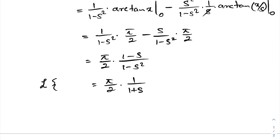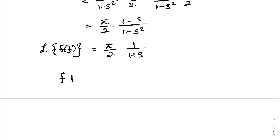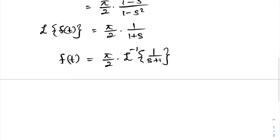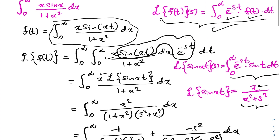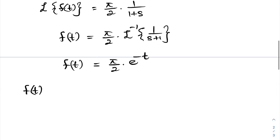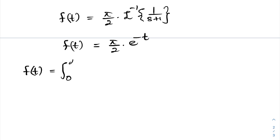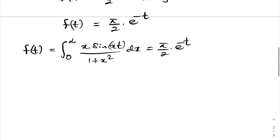We now know this equals the Laplace transform of f(t). To isolate f(t), we take the inverse Laplace transform: f(t) equals pi over two times the inverse Laplace transform of one over s plus one. We know the inverse Laplace transform of one over s plus one is e to the minus t, so f(t) equals pi over two times e to the minus t. Recalling that f(t) equals the integral from zero to infinity of x times sine of xt over one plus x squared dx, we have confirmed this equals pi over two times e to the minus t.